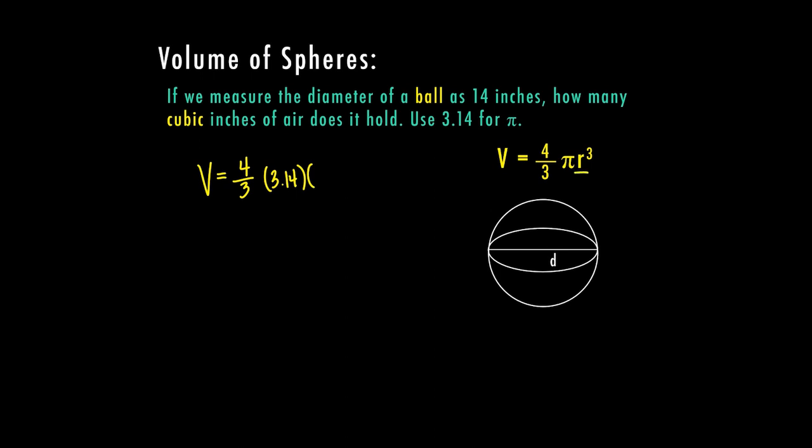Now the diameter is all the way across my circle. The radius is half of that. So if my diameter is 14 inches, my radius is seven inches. So I'm going to plug in seven cubed and now I can solve.